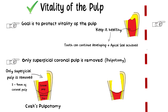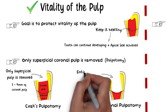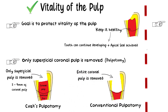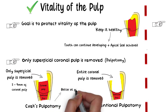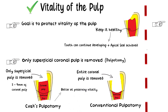When there is a larger exposure, or if the pulp was exposed for a very long time, then conventional pulpotomy can be done, in which the entire coronal pulp is removed at the level of the apical constriction and only the radicular pulp is spared. Research has demonstrated that Cvek pulpotomy has a better success rate for keeping the pulp vital and for continued root development, as compared to conventional pulpotomy, since more of the pulp is left in Cvek pulpotomy.